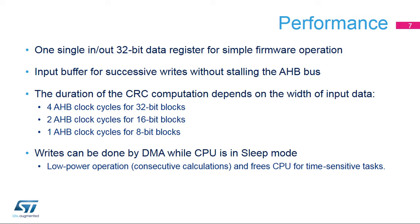The duration of the computation depends on the data width: 4 AHB clock cycles for 32-bit blocks, 2 AHB clock cycles for 16-bit blocks, and 1 AHB clock cycle for 8-bit blocks. The DMA controller can be used for writing to the CRC engine, offloading the CPU for other tasks and enabling back-to-back calculations for verifying code or data integrity.